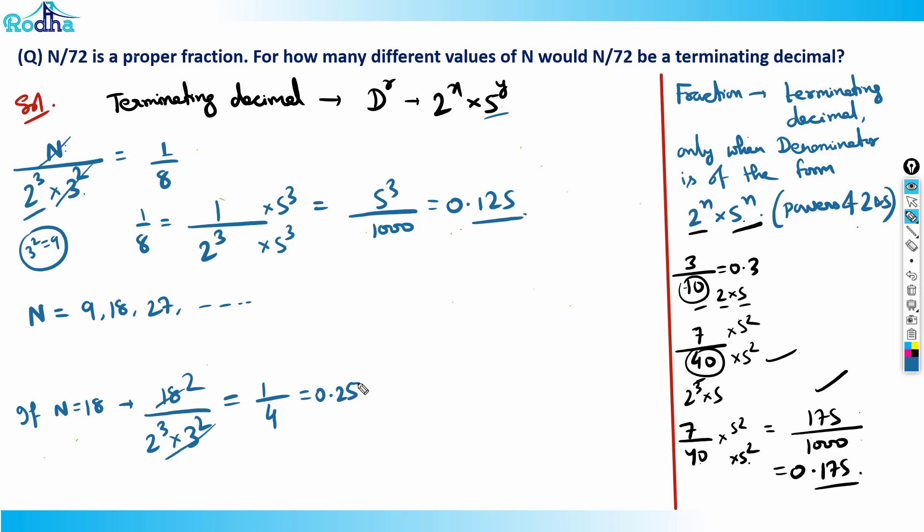So basically, N can take all these values. N can be any multiple of 9 such that it cancels 3². So it can be 9, up to where? Up to 63, because